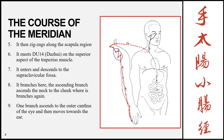From the scapular region, the meridian moves medially to connect to DU14 on the upper back region. Then it loops back towards the anterior portion of the body and enters the supraclavicular fossa. From here it has two branches: an ascending branch and a descending branch. The ascending branch rises up the neck, past the jaw, to the cheek. At the cheek, it splits again with one branch traveling towards the outer canthus of the eye and then to the ear.